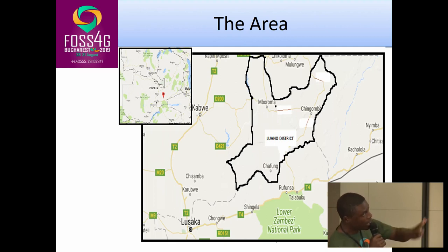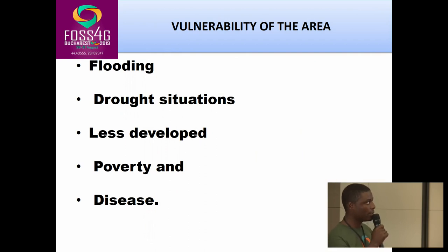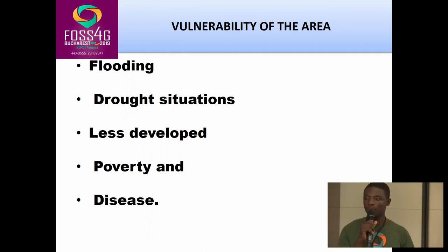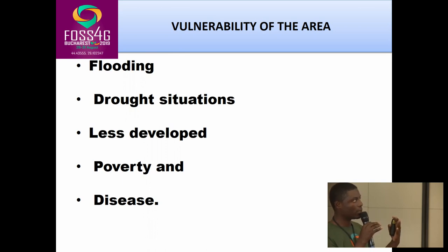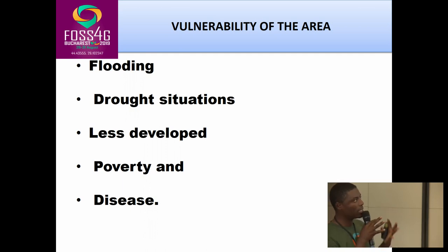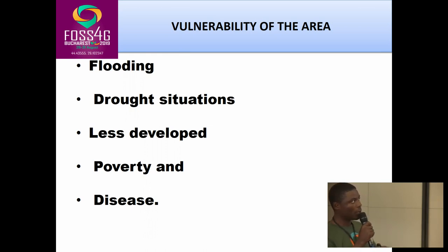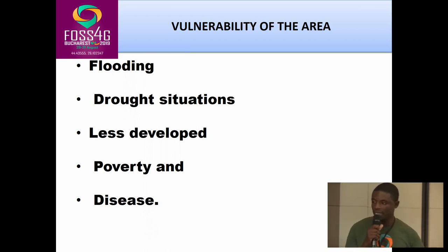The area is very lacking in development and very vulnerable. It has a two-topography area — one part is a plateau and the other part is not. The non-plateau part experiences frequent flooding and climate change has brought drought as well. The place is less developed with a lot of poverty and disease. This district has a lot of things yet to be implemented, such as clinics, health facilities, and roads.